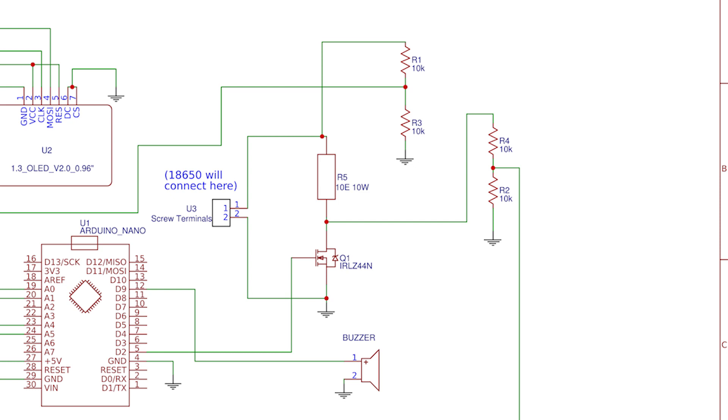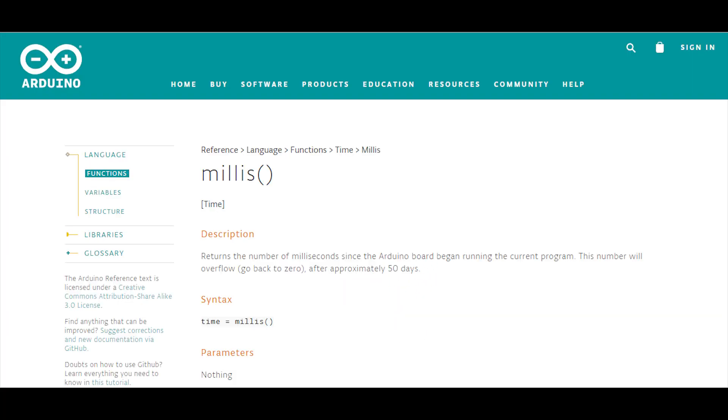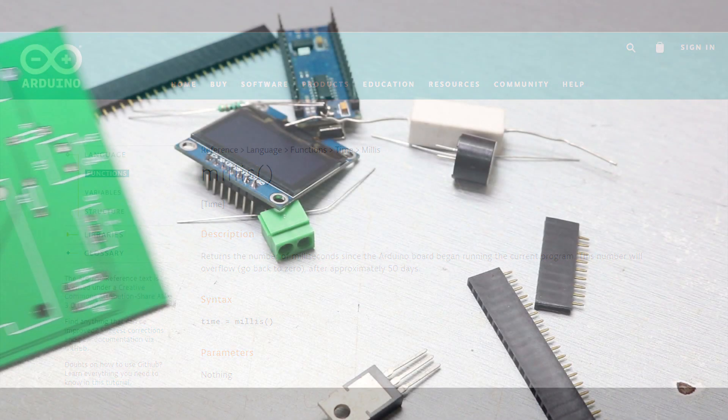And if it is between 4.3 volts and 2.9 volts it will turn on the MOSFET and the battery will start discharging through the resistor. And measure the current using Ohm's law. And it uses the millis function to measure the time during that period and gives us the capacity.